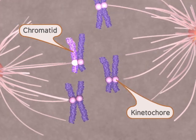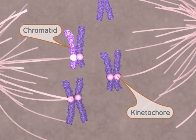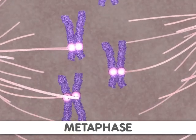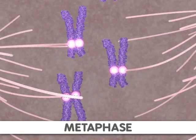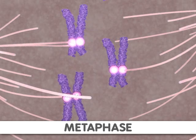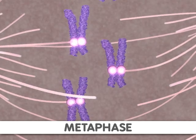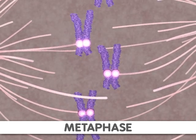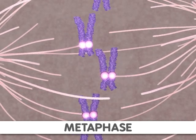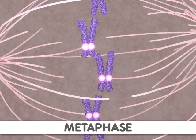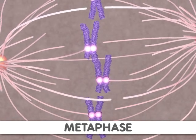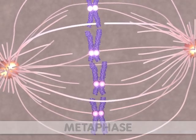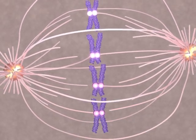Next comes metaphase. During this stage, the sister chromatids align along the center of the cell so that both chromatids face toward opposite poles of the cell. Now the sister chromatids are ready to be separated.